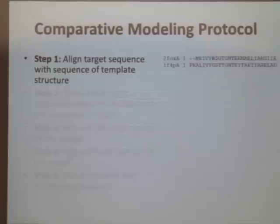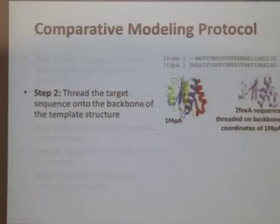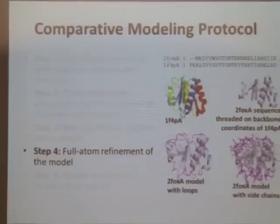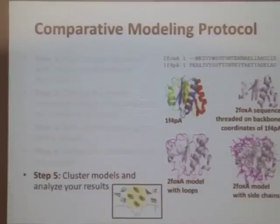In the tutorial, we're going to use ClustalW because a lot of developers in Rosetta use it. In the threading step, you take your template structure and thread the amino acids onto the template backbone regions, then do a rebuilding of the loop regions — the peak areas in between the secondary structure elements. Finally, you do a full-atom refinement of the entire model with the side chains, then cluster your models and analyze your results.